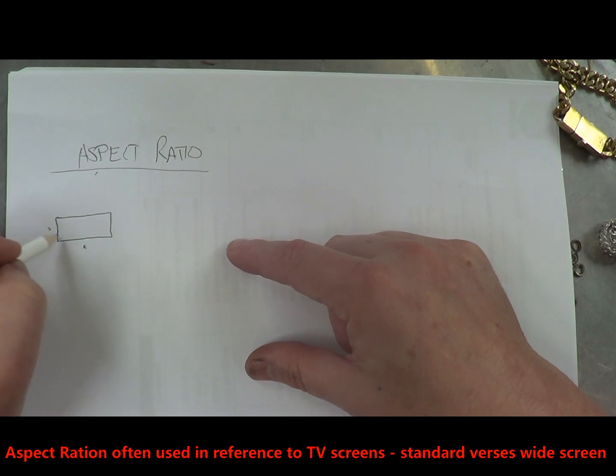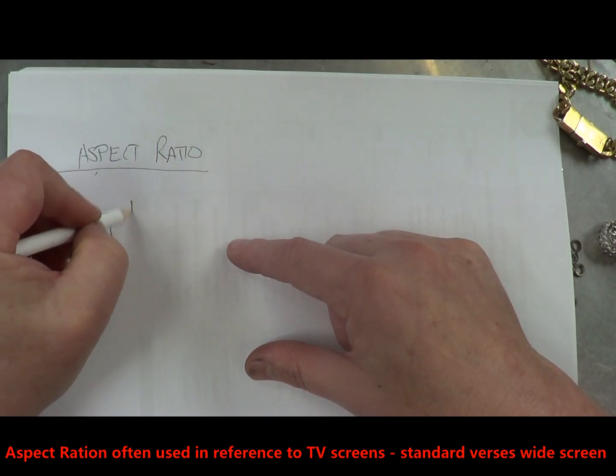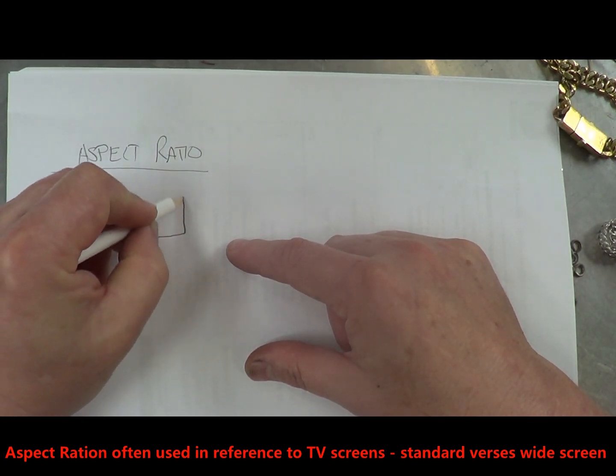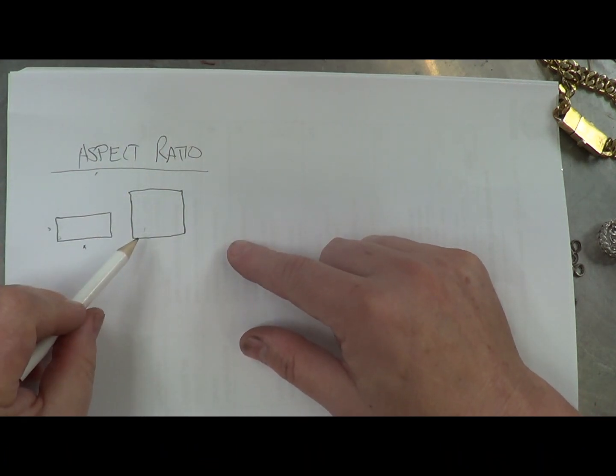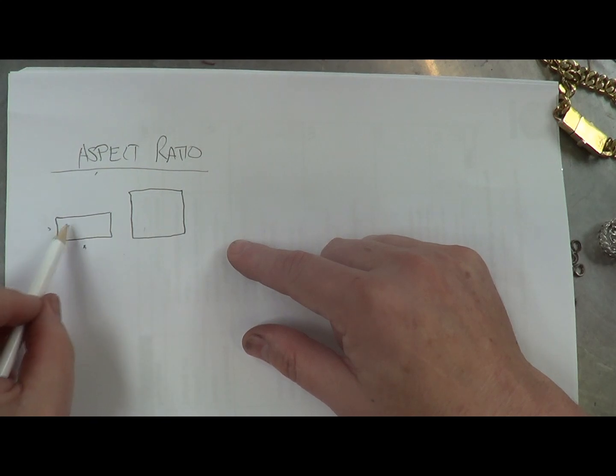That's got a different aspect ratio to one like this. So it's still a rectangle, it's not a square, but it's closer to a square than that one. So the ratio of the width to the length on this one is much greater than the ratio of the length to width on this one.